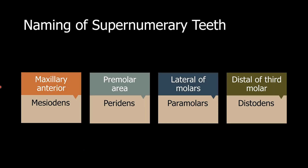On a previous video, we talked about naming of the supernumerary teeth. If we have a supernumerary tooth in the maxillary anterior region, we call it a mesiodens. If we have a supernumerary tooth in the premolar region, it's known as peridens. If the supernumerary tooth is on the lateral aspect of molars, it's called paramolars. And if it is on the distal of the third molar, it's called a distodense.